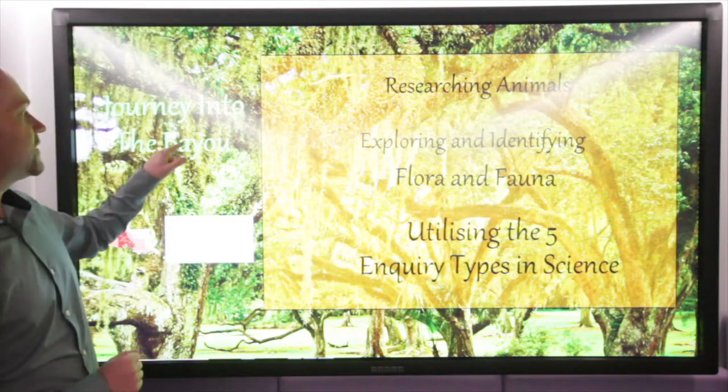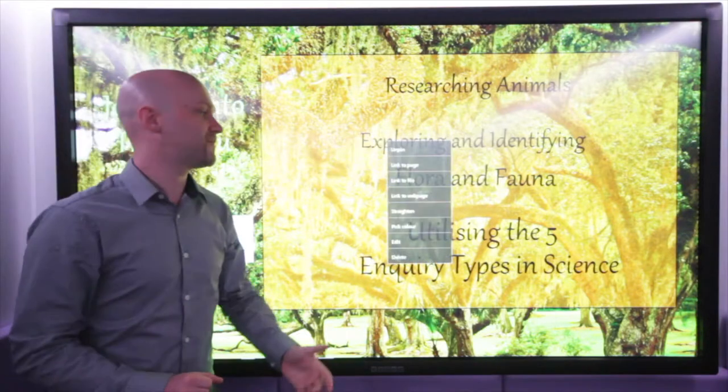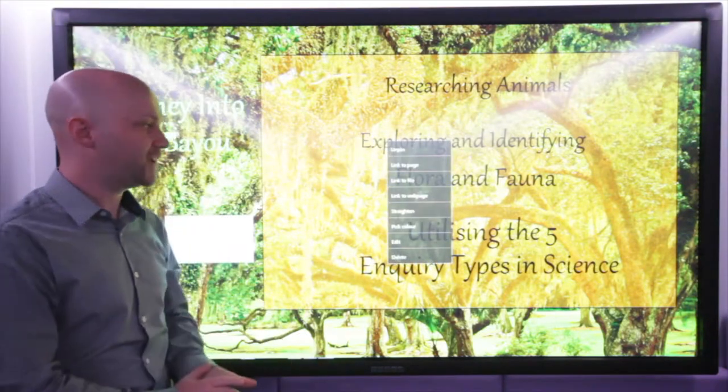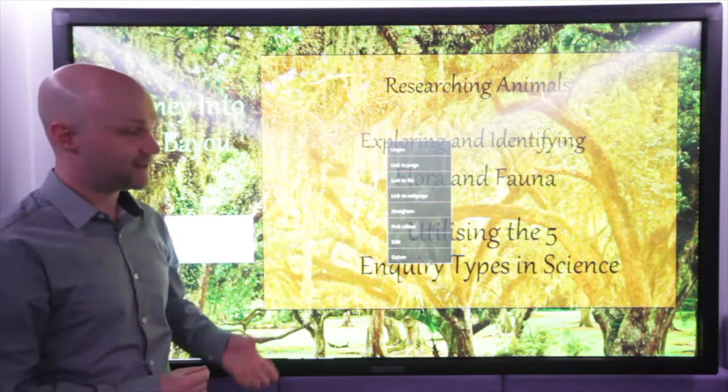So that's the one for the toolbar. We can do things with individual text boxes whereby if I press and hold, I'm going to get some very simplistic stuff. I'm going to see unpin, link to page, link to file, link to web page, straighten, pick colour, edit and delete.